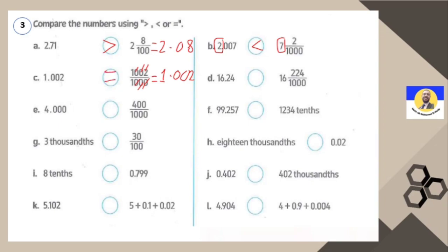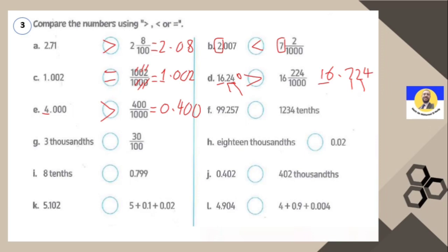Next: 16 versus 16 and 224 thousandths. Both have 16 before the decimal. After decimal: 2 and 2 match, but then the next digit — here it's 4 versus 0. So 4 is the greatest, meaning 16.224 is greater. Remember, you can add an extra zero to the first number making it 16.240, confirming 240 is greater than 224. Next: 400 over 1000 means 0.400, which is 0.4. But here it's 4 — a whole number — so 4 is greater than 400 thousandths.